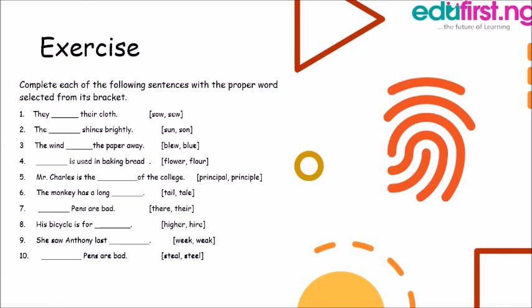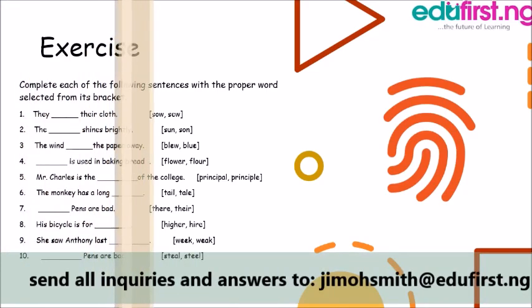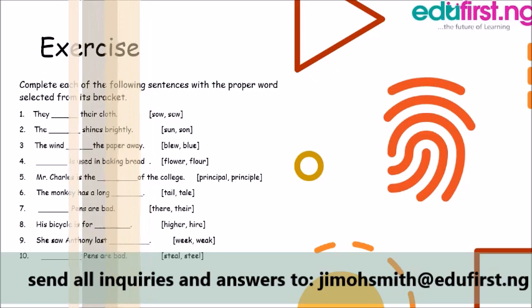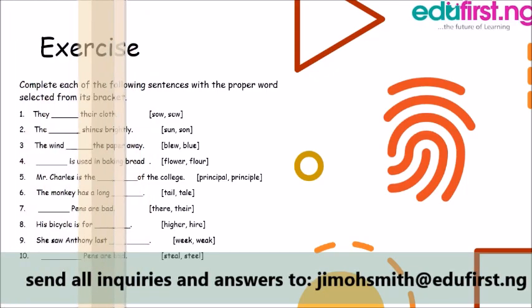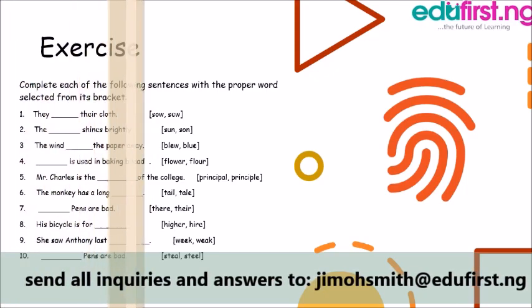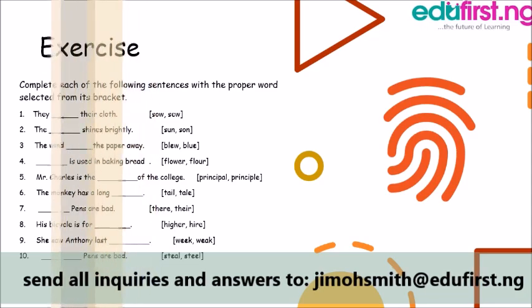So here's a quick exercise for you to take on. You have to complete each of the following sentences with the proper word selected from the brackets. On the right side you have two words in the bracket — you have to pick one of those words and fit it in the blank. Make sure you're fitting the correct word. See you in the next class!